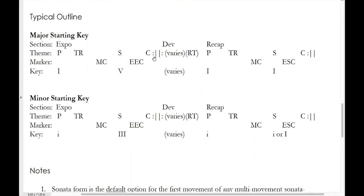Typically, the entire exposition would be repeated, which is why repeat signs are included here. After the exposition closes, then we get the development. There's not a lot that can be put schematically here because there are a lot of different plans that are possible. The development often will pull at least some thematic material from the exposition, but often not all four thematic zones. One extremely common option is for the development to start with material drawn from P and then at some point switch over to material derived from C. There aren't a finite number of tonal plans possible in the development, and this passage will be characterized by fragmentation and modulation to some degree.